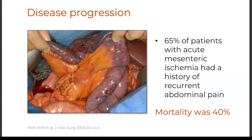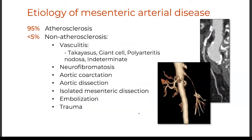The issue with chronic mesenteric ischemia is that if left untreated, the disease progresses and eventually leads to acute ischemia with bowel infarction. In a review by Mike Park of the Mayo Clinic experience, 65 percent of patients with acute mesenteric ischemia had a history of recurrent abdominal pain, and mortality in that cohort was 40 percent.